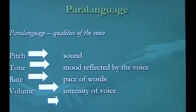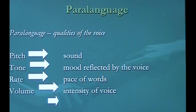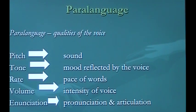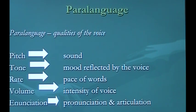Volume is how loud or soft we speak — the intensity of voice. Our volume varies with how we're feeling and where we are. We may speak louder at a football game due to external interference, but softer in church or a library. Enunciation refers to pronunciation — how a word is said — and articulation, which is speaking clearly and crisply so every syllable can be understood. Enunciation is extremely important as it shows you are familiar with the English language and are educated.